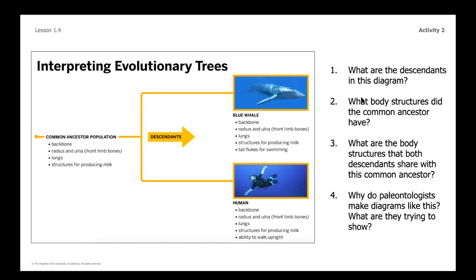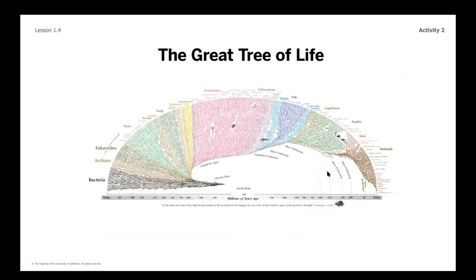Hopefully you noticed that the blue whale and the human are descendants, similar to where the ostrich and the crocodile were on the other diagram. You should have compared the bullet points to find common structures showing those two species are related. For the last question about why this is helpful for a paleontologist, any thoughtful answer works — such as helping organize which species are related or where different structures are located.